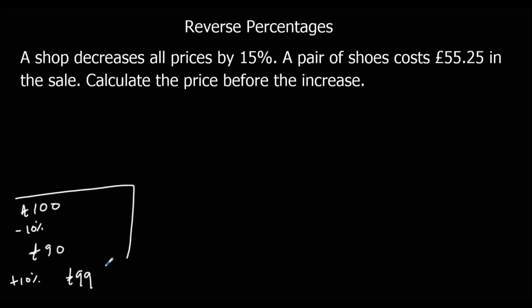What we've got to do is recognize what percent we've got. If the price had been decreased by 15%, that means I've got 100% minus 15%, so what I've actually got is 85%. So £55.25 is actually 85%.